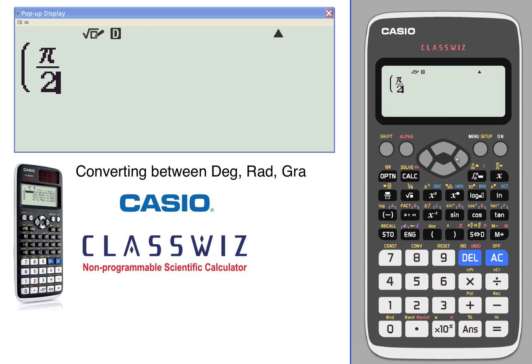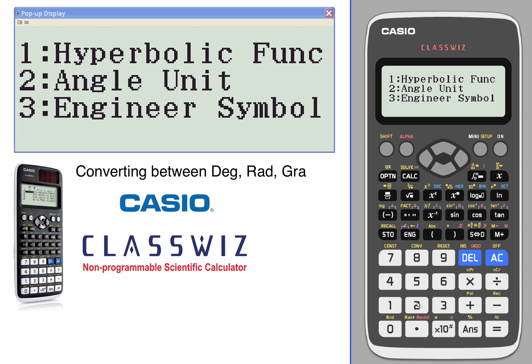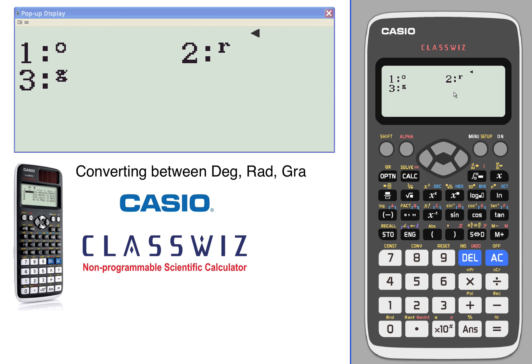We want to call that a radian, so we want to toggle out of there, option number two. We want to say that's a radian, close the parenthesis, hit equals, and it comes up as a 90 degree angle.